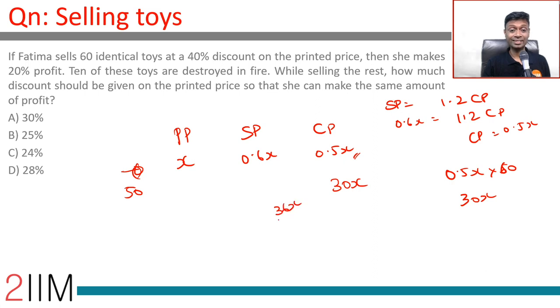She has to make 36x from just 50 goods, so she should sell at 0.72x. Her printed price is x, her selling price should be 0.72x, or she gives a 28% discount.